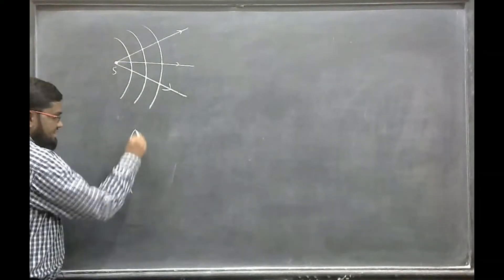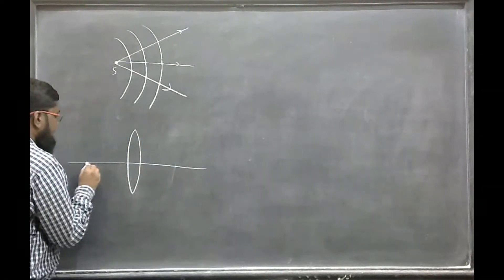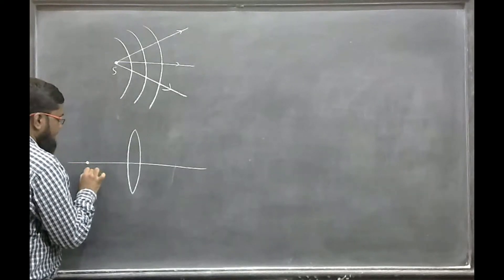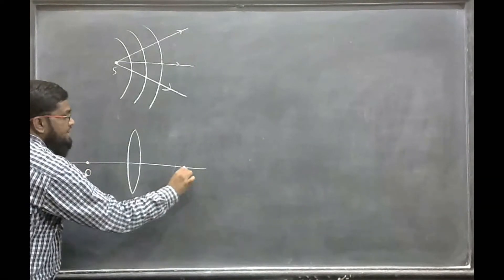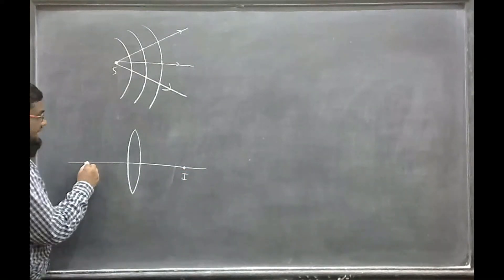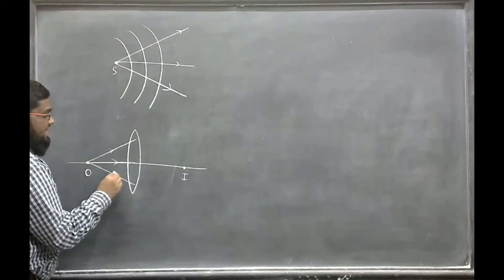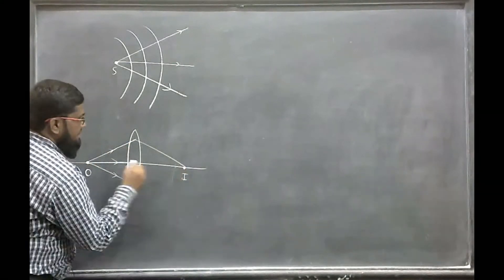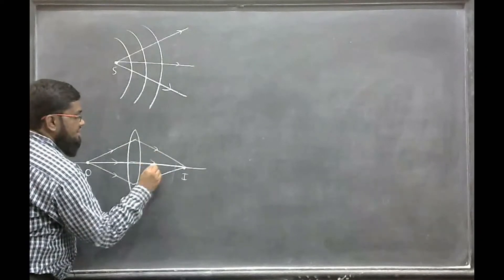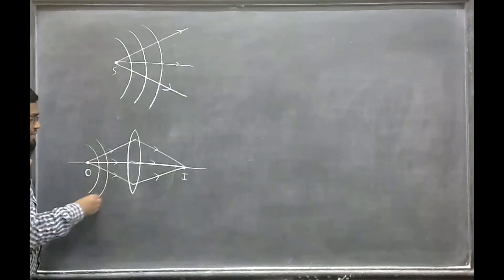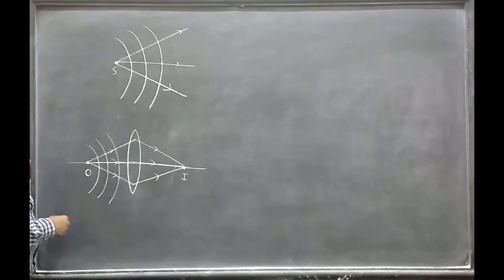There is a lens. Let us say there is a source called as object. Object from here. And somewhere here, image will be formed. Image will show up here. These are the rays, light rays. They will meet here. And here diverges, wave prints, and here converges. The same thing is converges. This one will show up. They are converging.